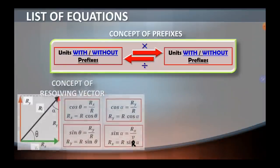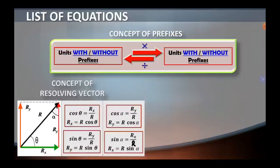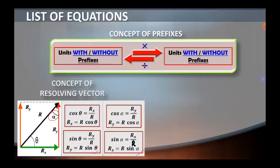The second concept is about resolving vector. Resolving vector is the process of splitting a vector into two components, namely the horizontal component and the vertical component. Kita consider kepada diagram tersebut — if the angle is at the horizontal component, then the horizontal component is known as R cos theta. Meanwhile, if the angle is at the position of the vertical component, that is alpha, then the horizontal component is R sin alpha, and the vertical component is R cos alpha.